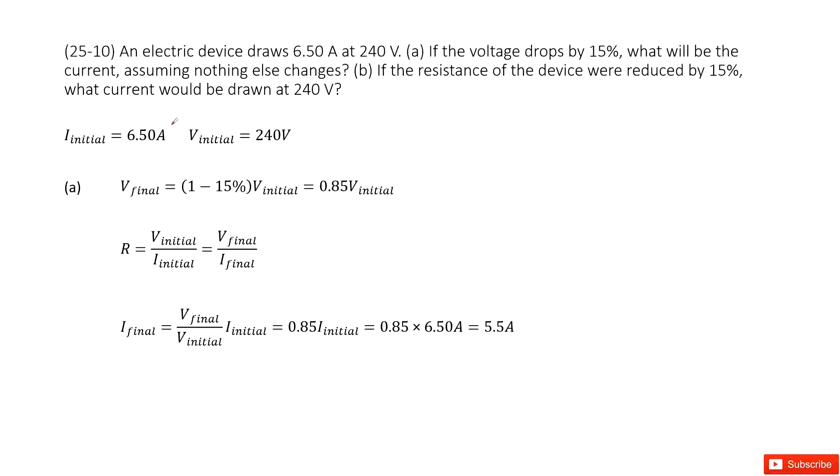Chapter 25 is about electric circuits and resistance. We have electric devices where the initial current and voltage are given. Now the voltage drops by 15%. What is the current now?